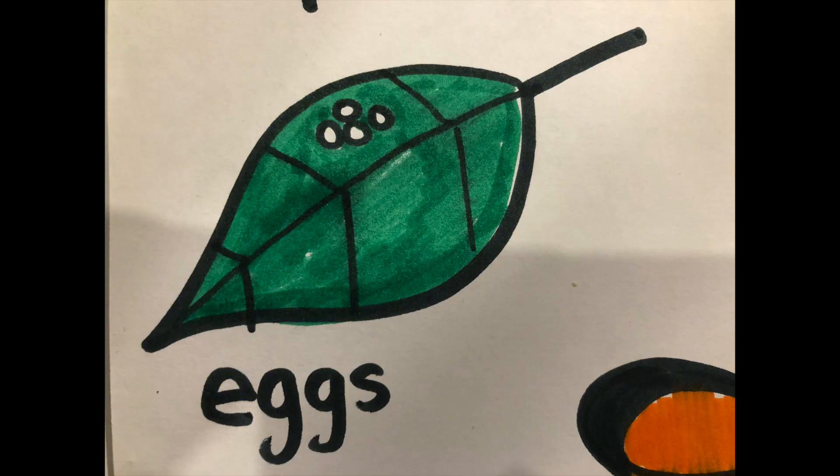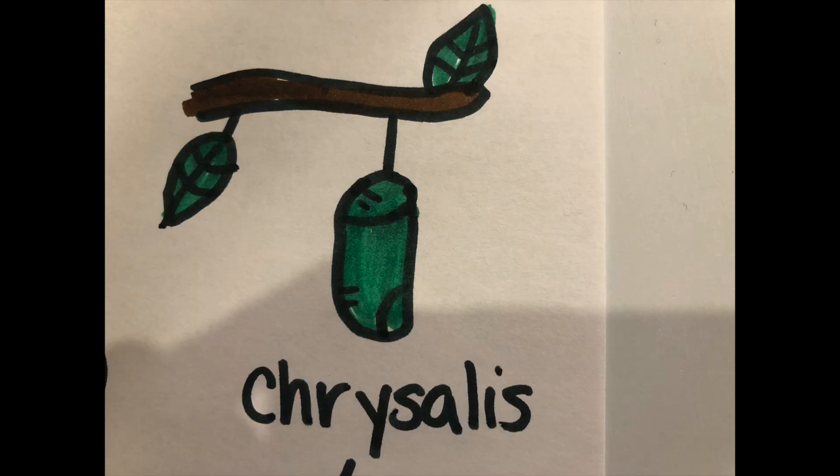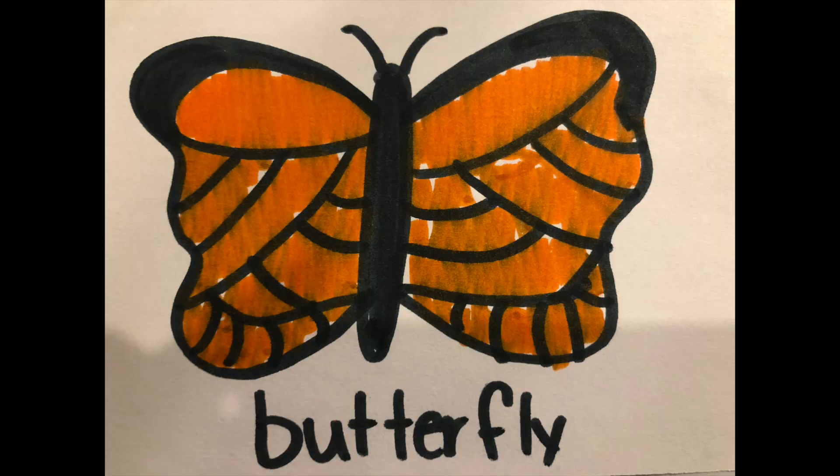Butterflies lay little teeny tiny white eggs on leaves. When those eggs hatch, they hatch into little caterpillars. And those caterpillars grow and grow bigger and bigger until they form something around their body, kind of like a shell called a chrysalis. And while they're inside that chrysalis, they form wings. And when they're ready, they break out of that chrysalis and they become a beautiful butterfly.